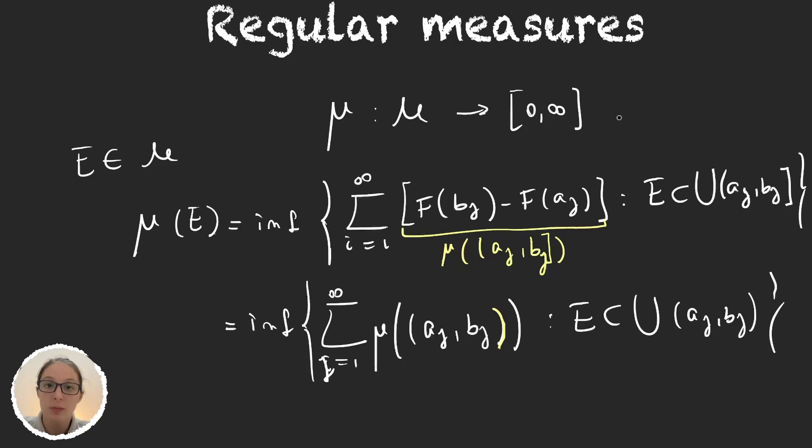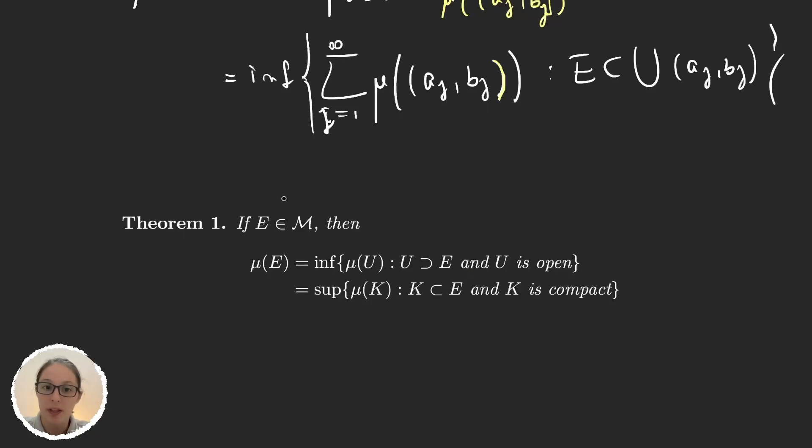So like before we had a measure in the sigma algebra, we take a set in that sigma algebra. And the measure of the set can be written in two ways. It can be the infimum over the measure of open sets that cover our set E, or the supremum of compact sets that are subsets of the set we're measuring.